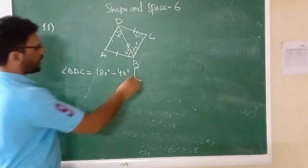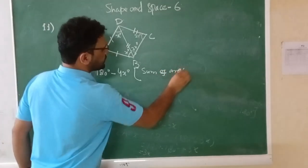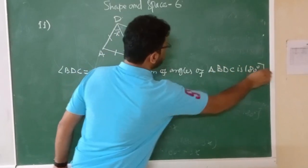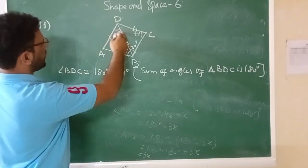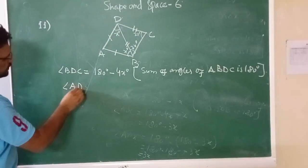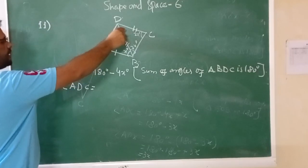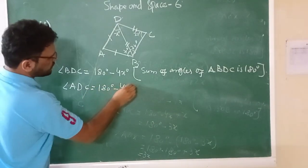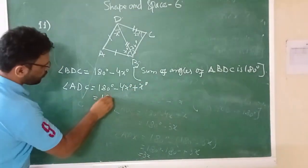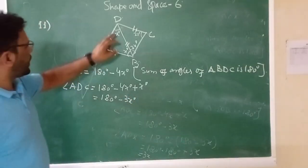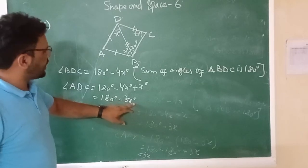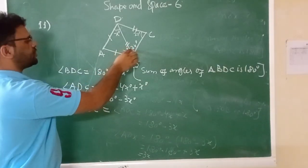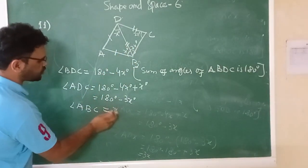The reason is that the sum of angles of triangle BDC is 180 degrees. Now angle ADC is the combination of angles BDC and BDA: that is (180 minus 4x) plus x, which equals 180 minus 3x degrees. And angle ABC is the combination of angle ABD and angle DBC: x plus 2x equals 3x degrees.